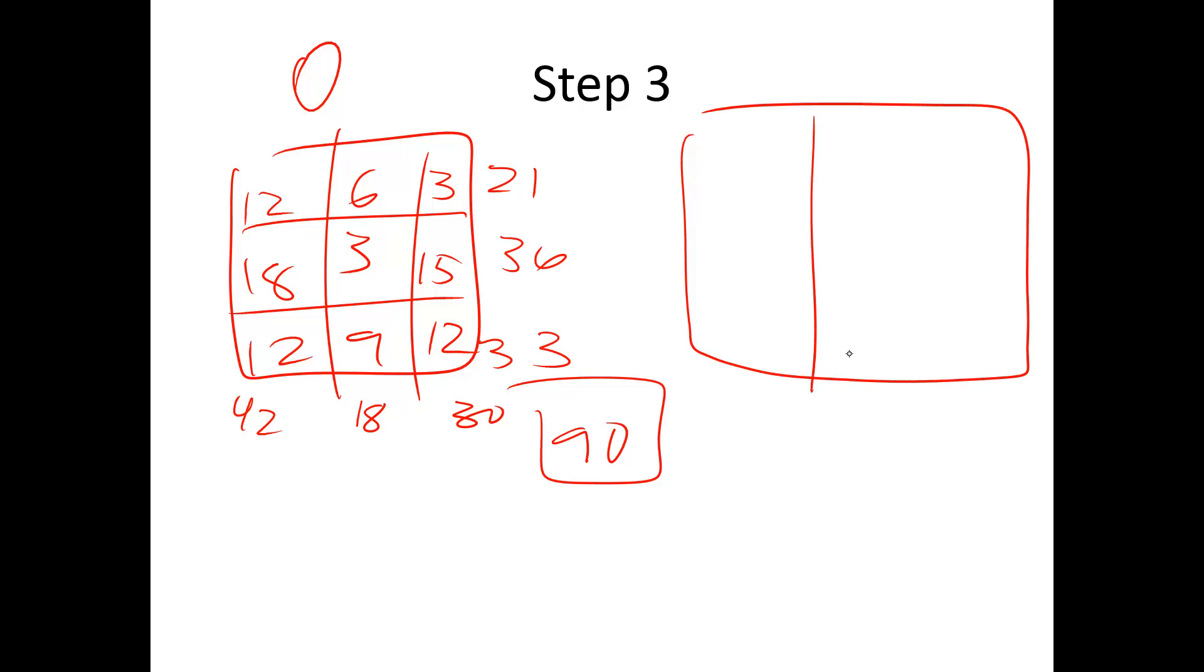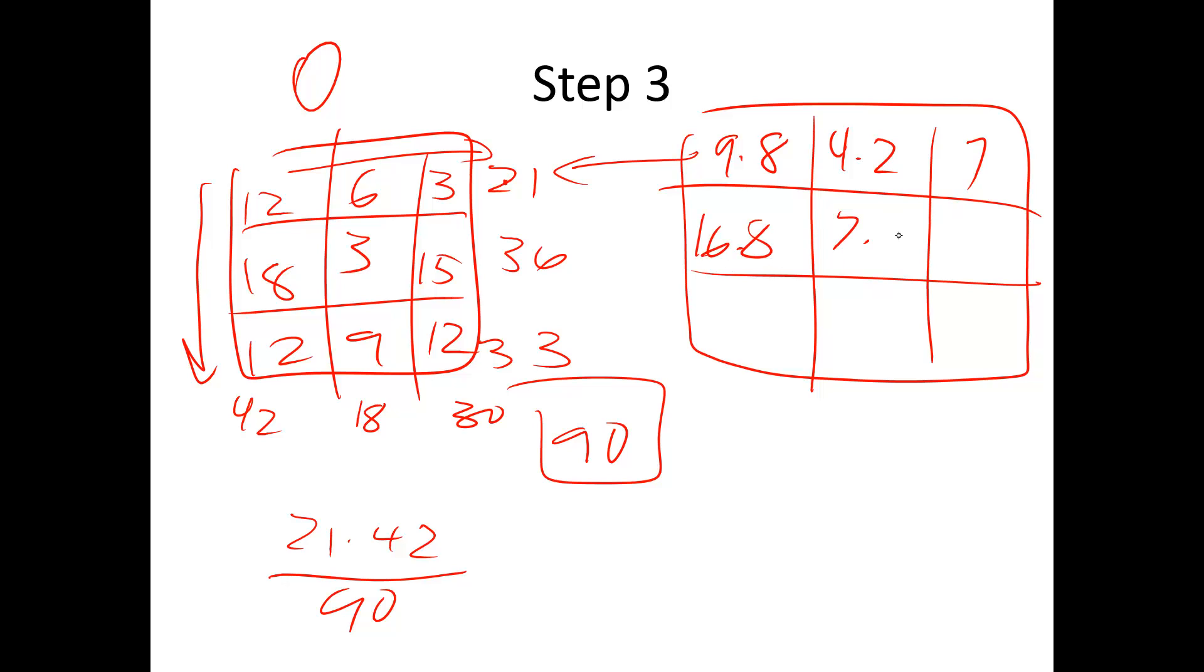And then we would create our E values from those. So the first one I would take 21 times 42 divided by 90. So 21 is this one here by 42 divided by 90. We'll do that for all of them, I'll just tell you what the numbers are, but that's how you calculate it. So it's 9.8, 4.2, 7. So that total should still be equal to 21 over here, 16.8, 7.2, and 12, 15.4, 6.6, and 11. And you can make sure you've done that right because the row and column totals should still be the same. So a quick check, is this column 30? Okay, so these are my E values. So I'm expecting seven people in this box, but I only have three, so that's going to make a big difference.